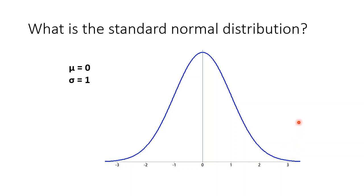Each number on the horizontal axis corresponds to a z-score. This z-score measures how far an observation lies from its mean in units of standard deviation, or it tells us how many standard deviations an observation is from the mean mu.